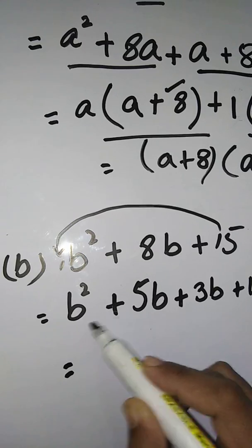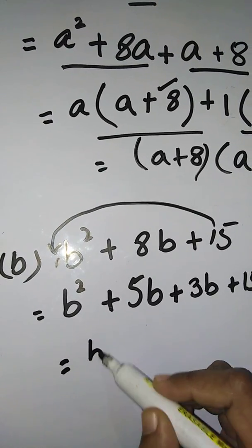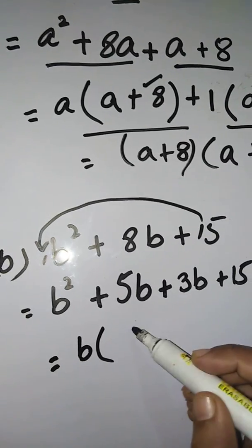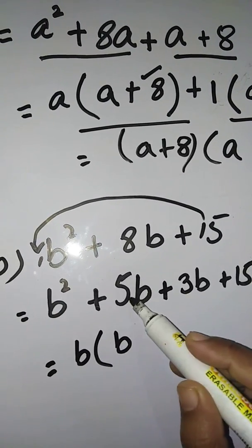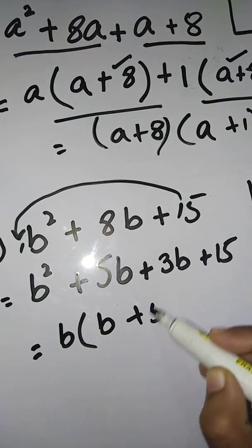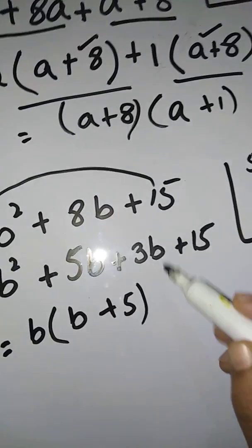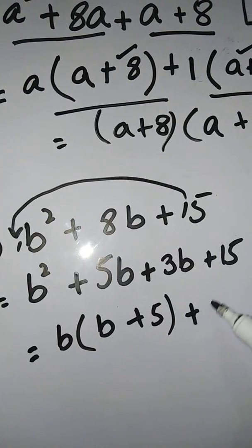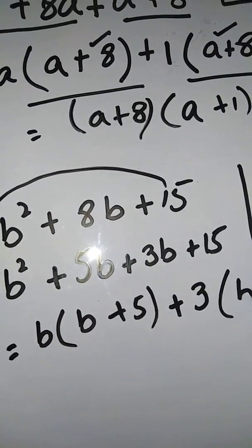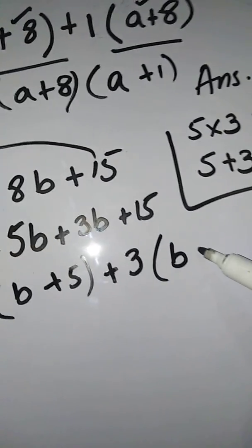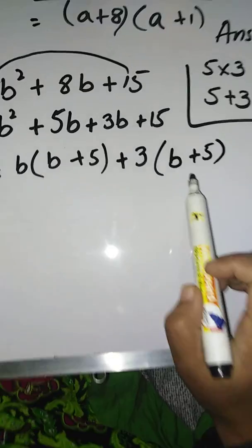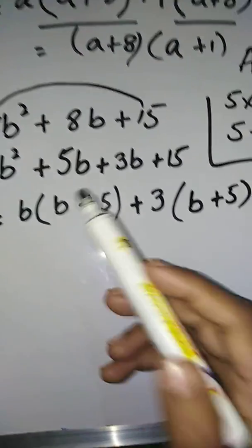Take 'b' as common from the first two terms. From b², taking b gives b; from 5b, taking b gives 5 — so b(b + 5). From the next two terms, take 3 as common: 3b gives b, and 15 ÷ 3 = 5, giving 3(b + 5). Both brackets are the same, confirming the sum is correct.